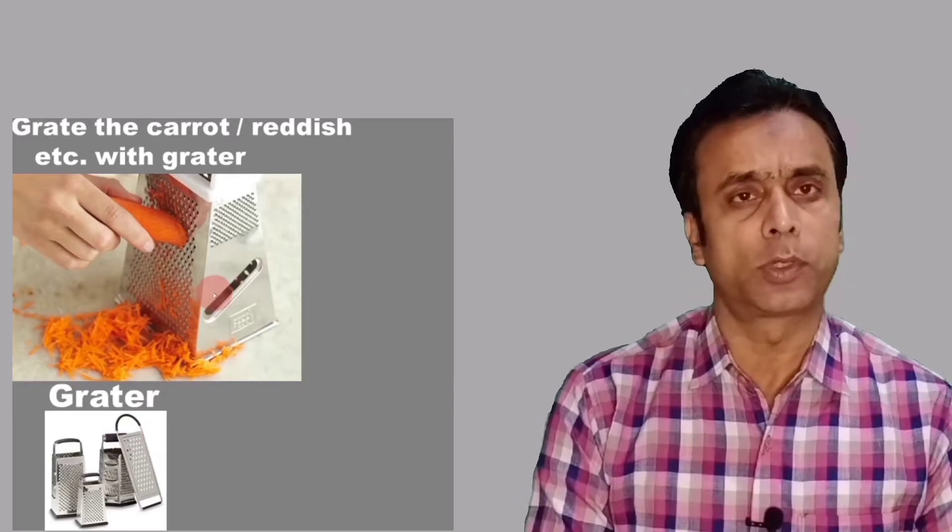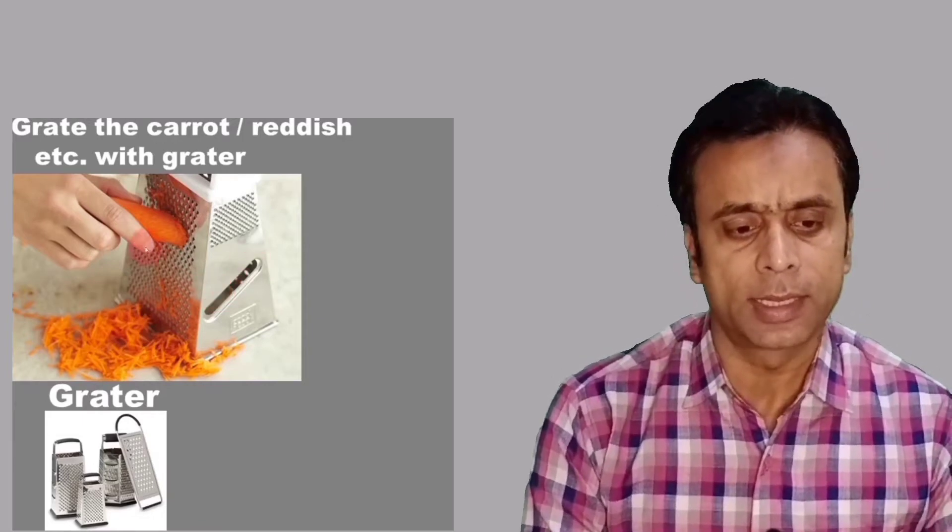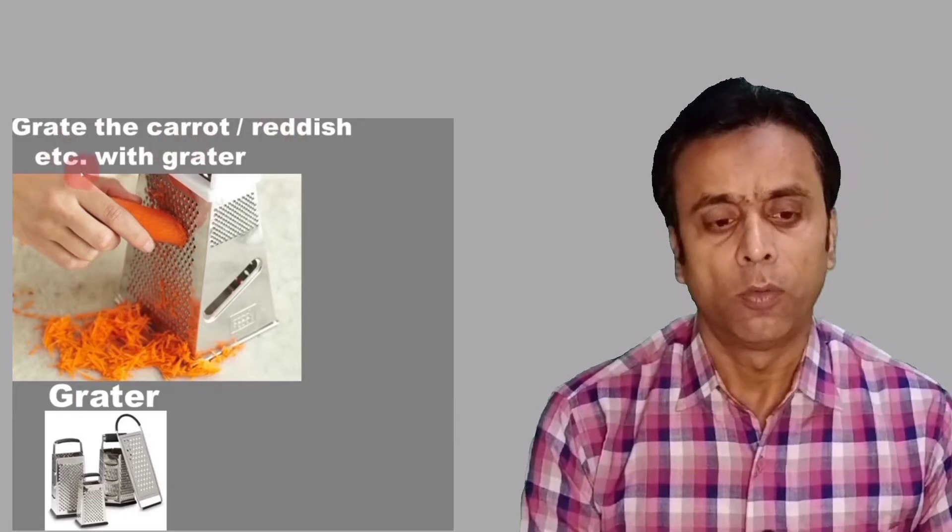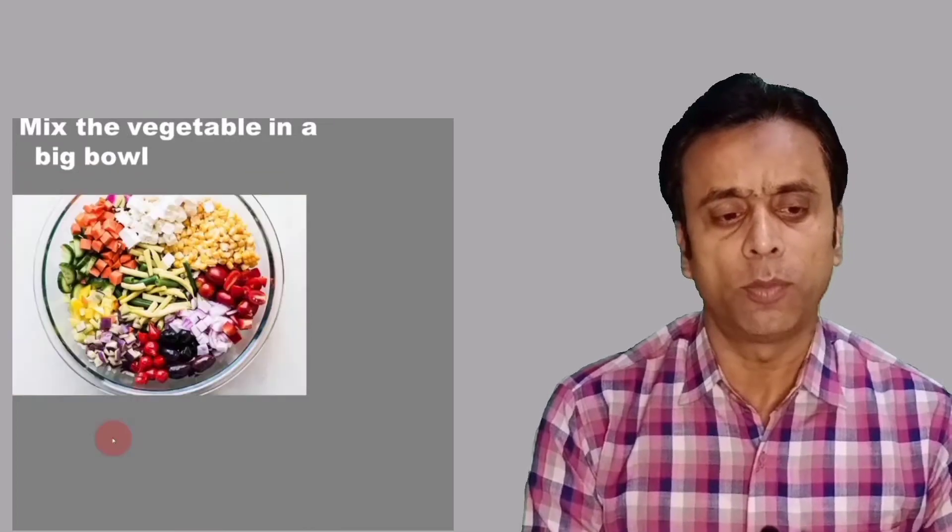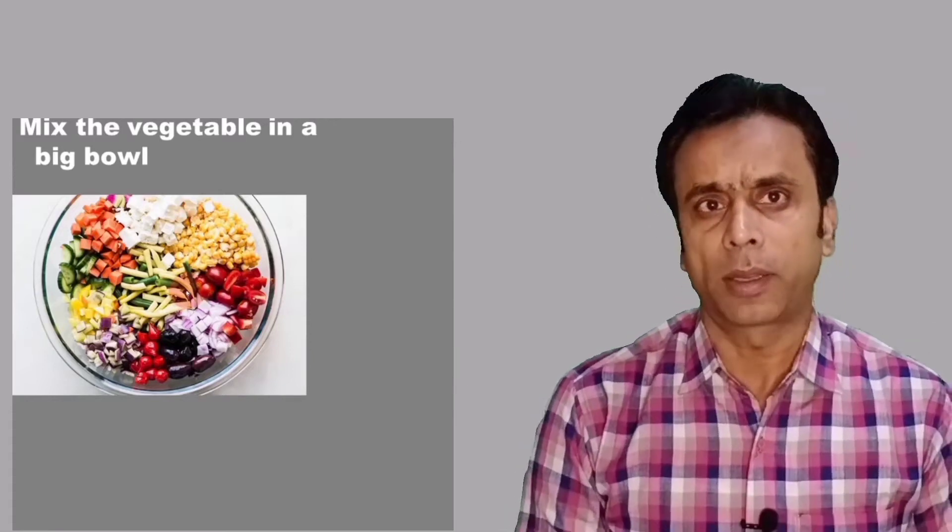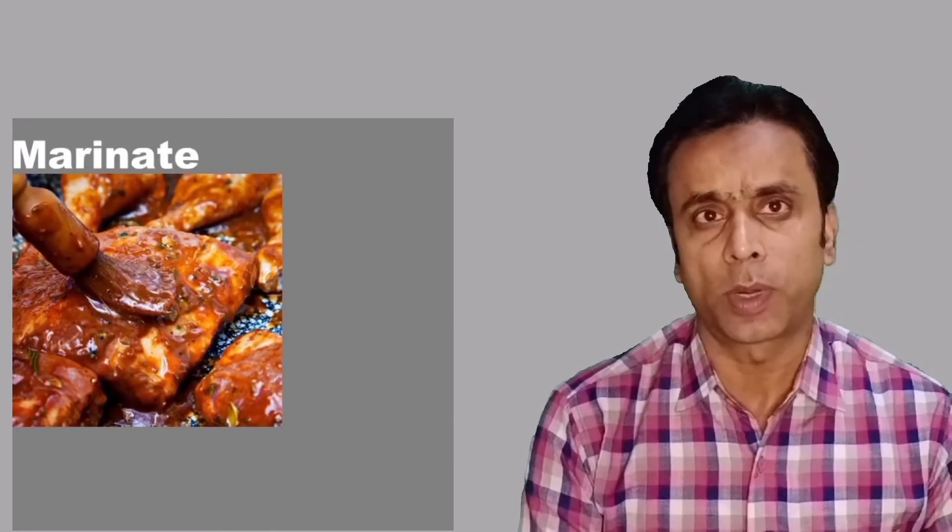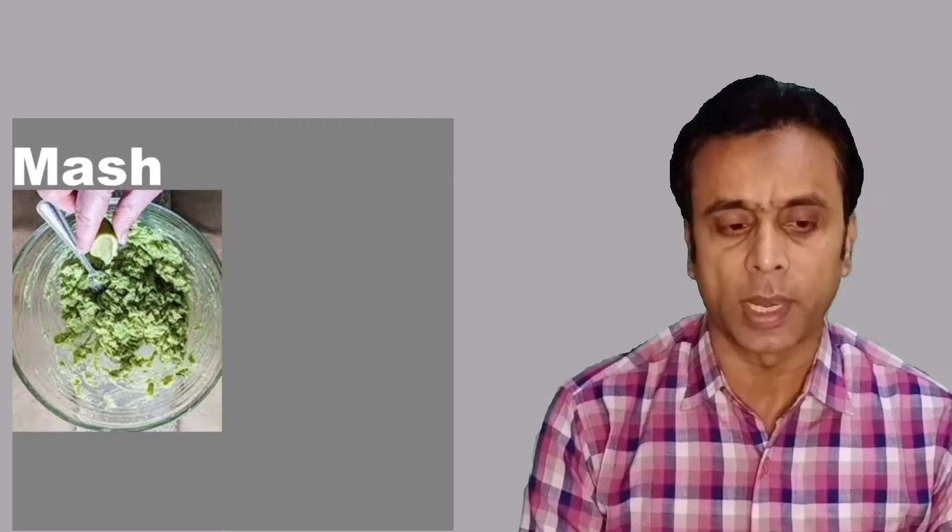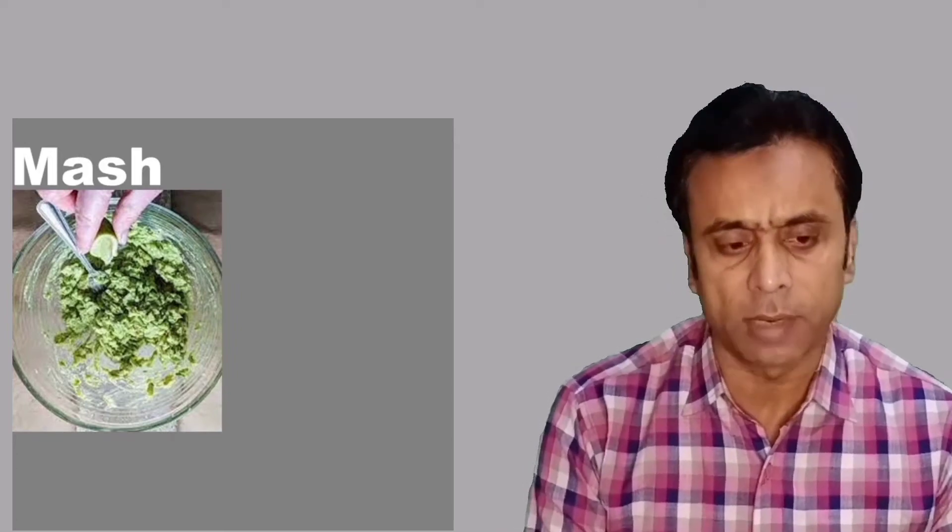If we have vegetables and we want to grate - grating is called grate. As you can see here, he is grating - grate the carrot or radish et cetera with grater. We call this grater. Mix the vegetables in a big bowl - bowl means large container. Sometimes we apply masala on the vegetables, whatever you are making. Suppose you are making paneer, you apply masala. We also mash vegetables, mixing besan and other things. Mashing means mixing spices. That's called mash - this is also a verb.